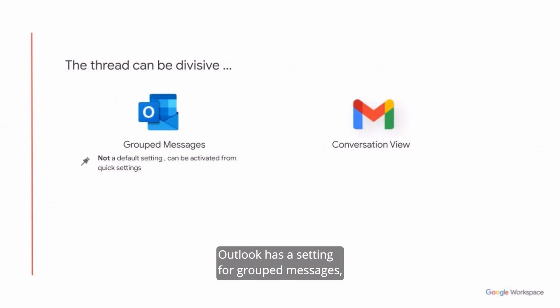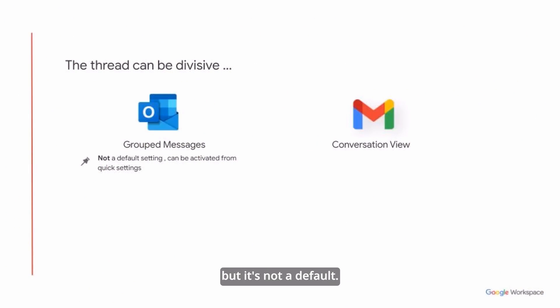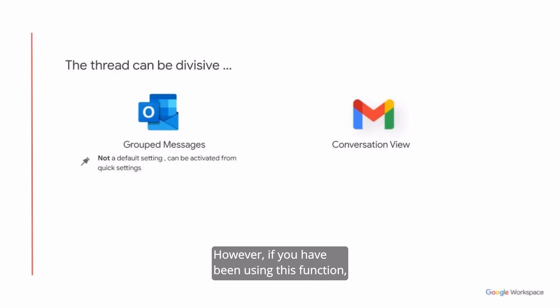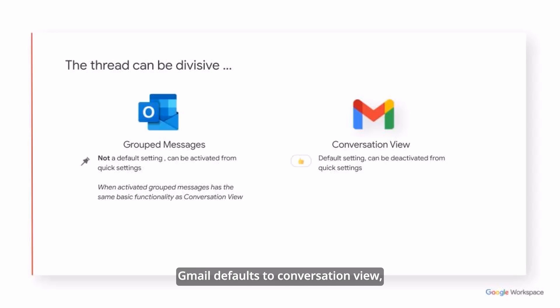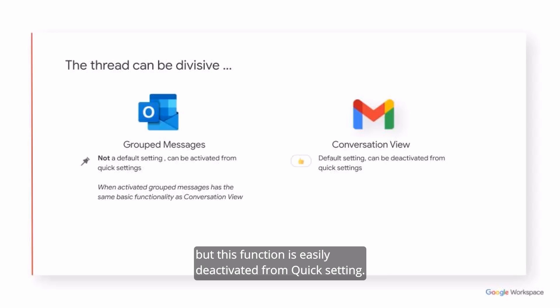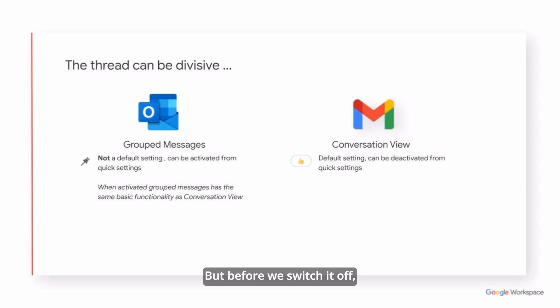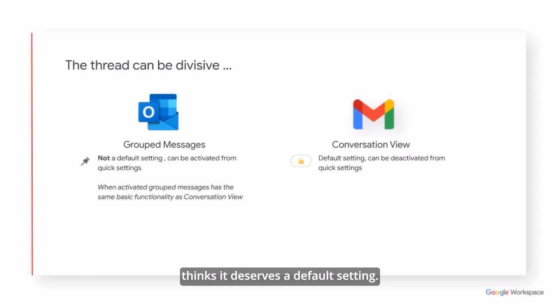Outlook has a setting for grouped messages but it's not a default. However, if you have been using this function, it does have the same basic functionality as Gmail Conversation View. Gmail defaults to Conversation View but this function is easily deactivated from Quick Settings. But before we switch it off, let's have a quick look at why Google thinks it deserves a default setting.